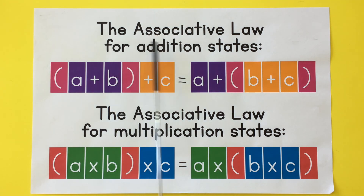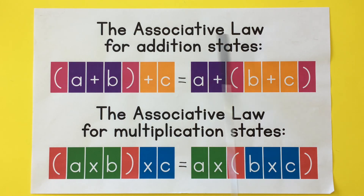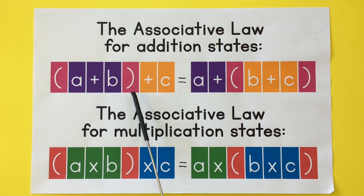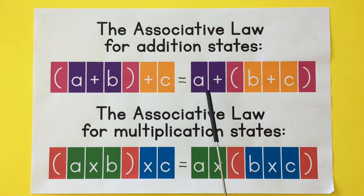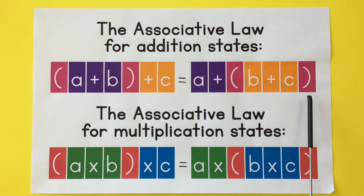And this is pretty long, so I like to say it in a chant like this. The associative law for addition states: (A plus B) plus C equals A plus (B plus C).